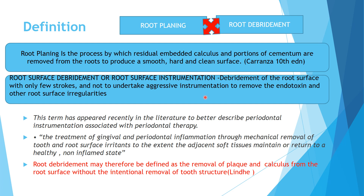This term has appeared recently in the literature to better describe periodontal instrumentation associated with periodontal therapy. It refers to the treatment of gingival and periodontal inflammation through mechanical removal of tooth and root surface irritants to the extent that the adjacent soft tissues maintain or return to a healthy non-inflamed state. Root debridement may therefore be defined as the removal of plaque and calculus from the root surface without the intentional removal of tooth structure.